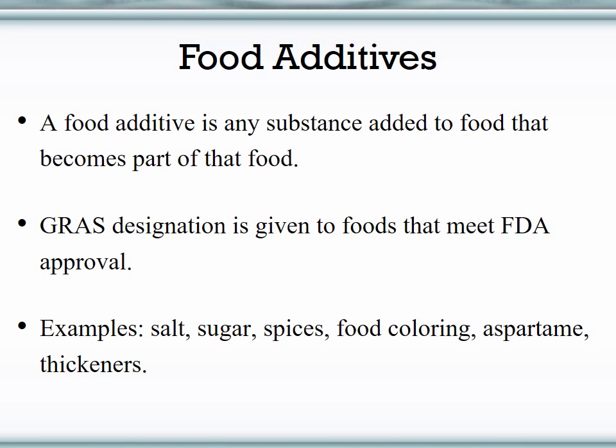Note that all of these additives have different roles. Salt, sugar, aspartame, and spices are specifically related to taste. Food coloring is related to appearance. Thickeners are related to baking and adjusting the texture of foods. Salt and spices can also be used to enhance shelf life. There are multiple reasons that you can use food additives in a product.